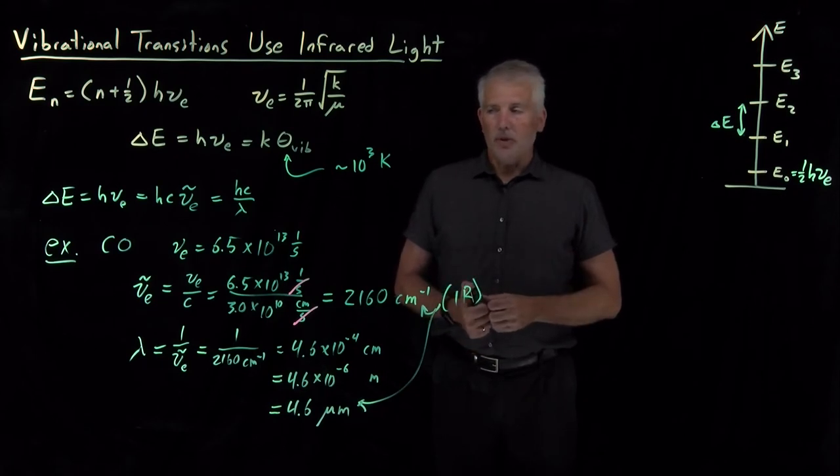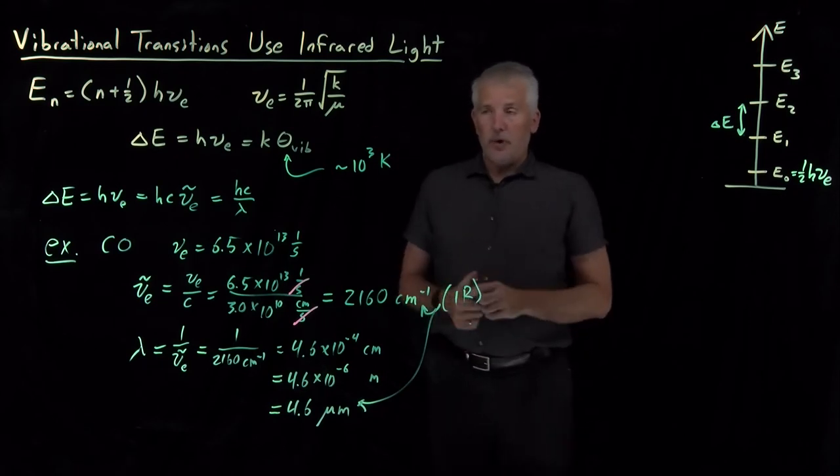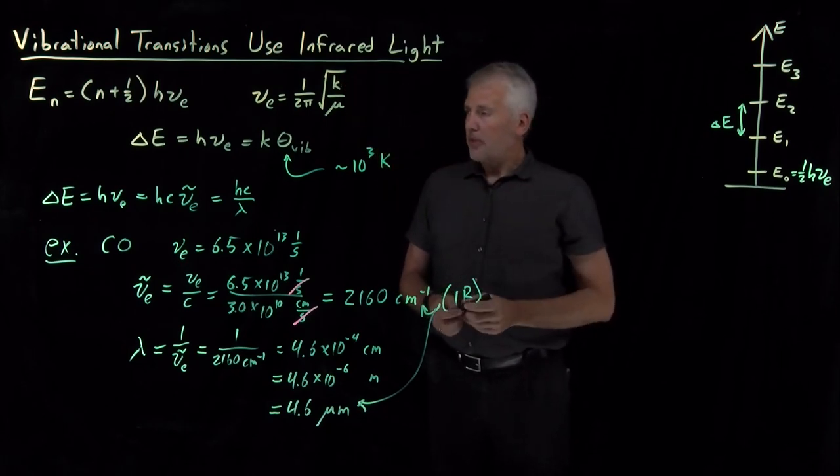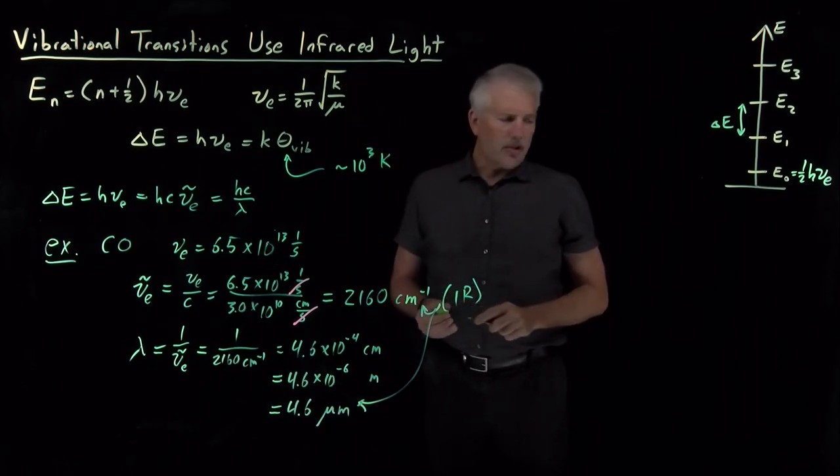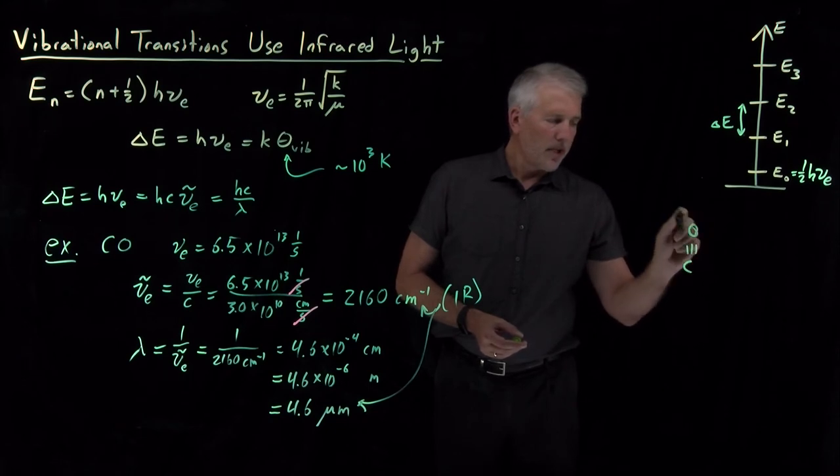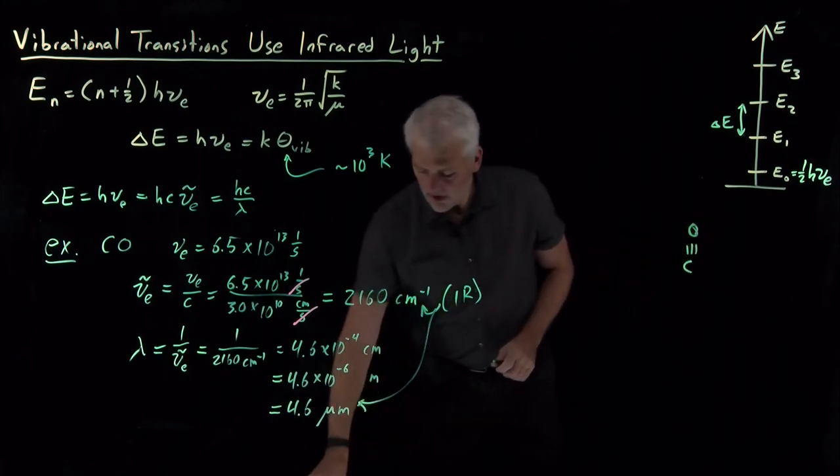And, likewise, for other organic molecules, each bond of which has its own spring constant, its own reduced mass. I suppose I should point out that it's not just diatomic molecules. So, we've, let me draw a carbon monoxide vertically. So, here's my carbon monoxide molecule.